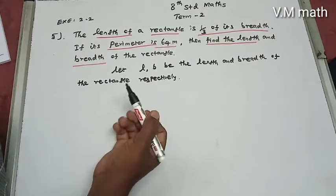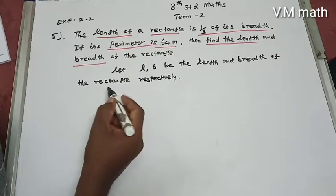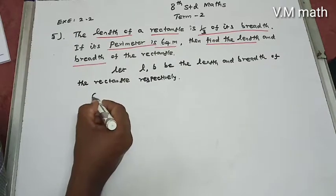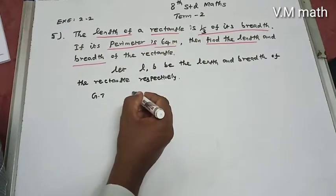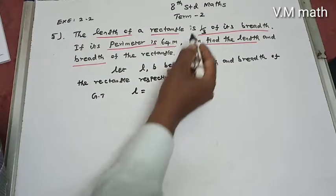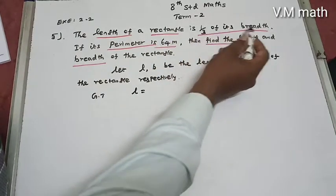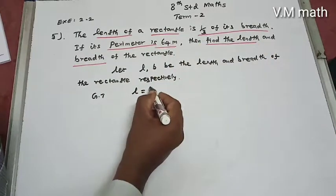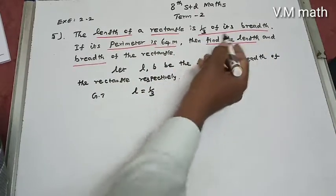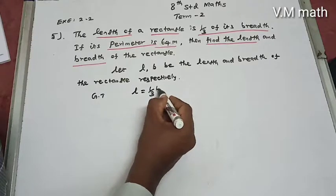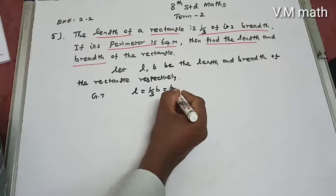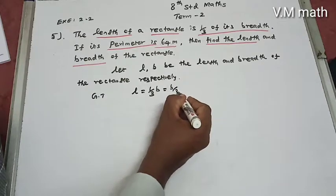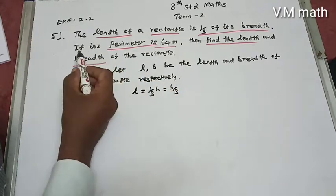Let L and B be the length and breadth of the rectangle respectively. Given that the length of the rectangle L is equal to 1 by 3 of its breadth B, so L equals B by 3.